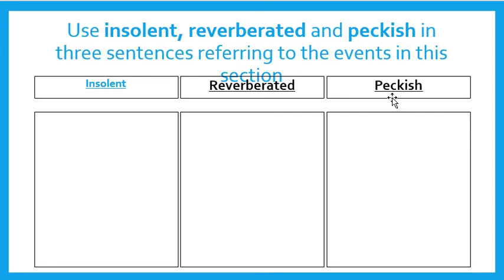So, for peckish, Maria was telling Bruno in the chapters that he had never known what it was like to be hungry. And he thought to himself, well, I'm actually a little bit hungry right now. And we know, as the readers, that that's not what she meant. But Bruno, being so childish, doesn't understand.